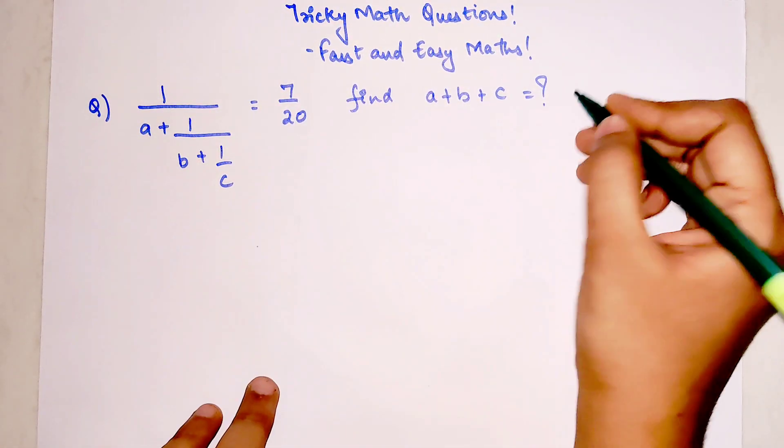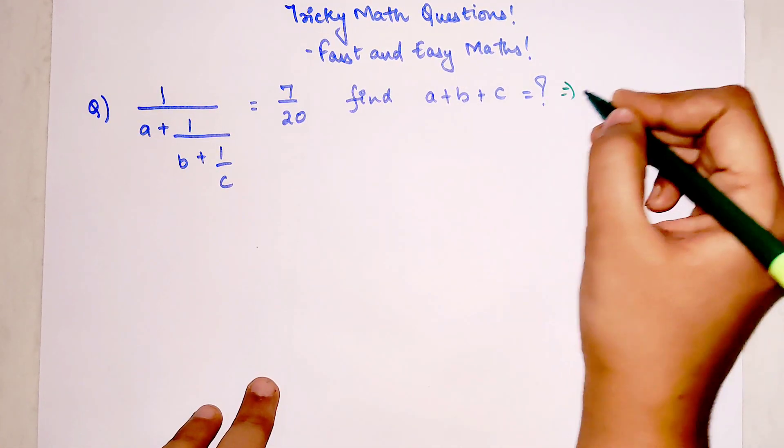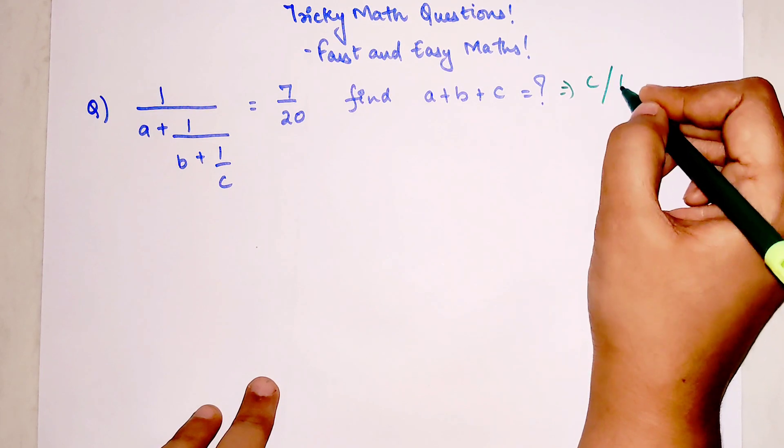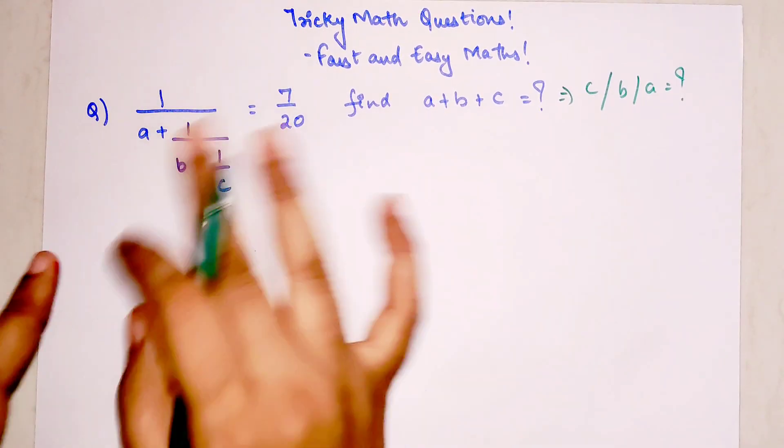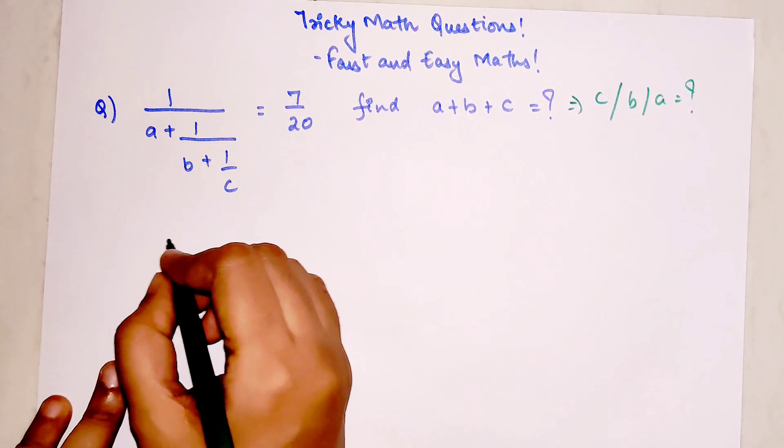For this question, you might also just be asked to find the value of C or B or A. So for this kind of question, the trick is super simple.